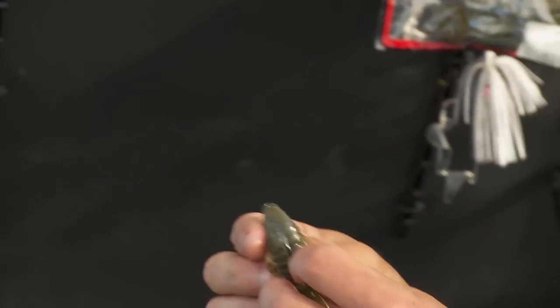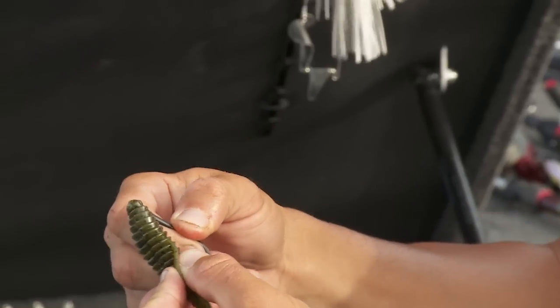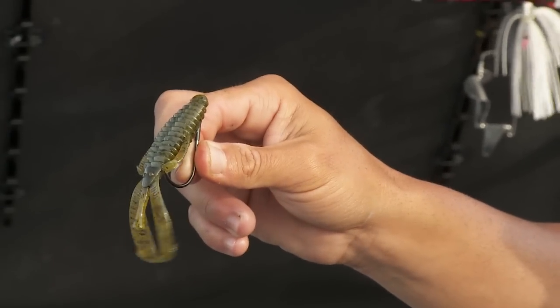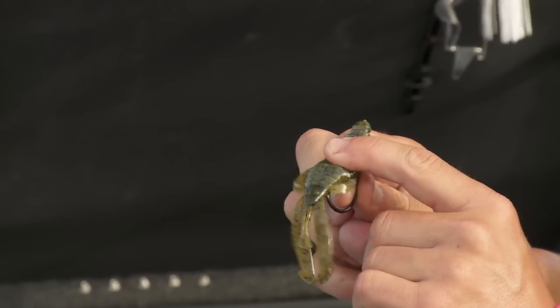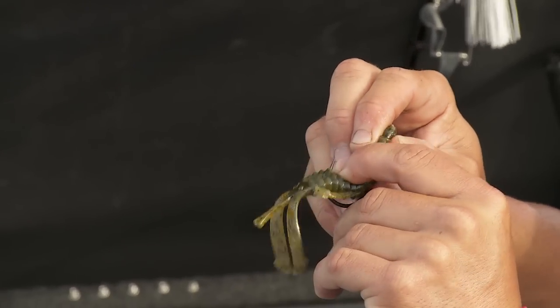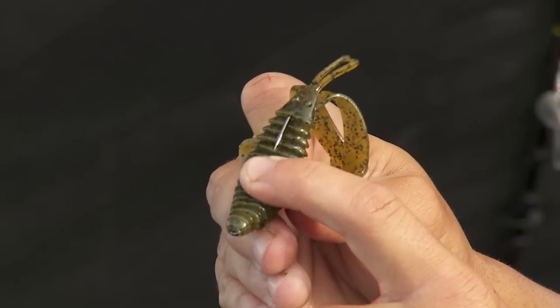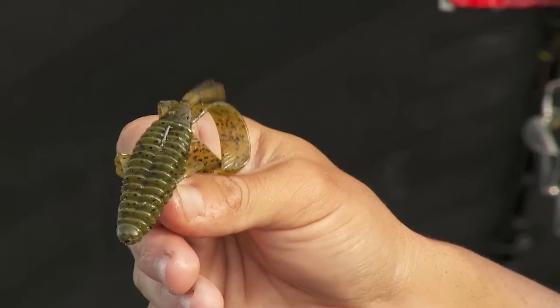You have to clean it cast after cast. So every cast you're re-putting your bug back on there and you're having to clean the grass off of it. When that grass is pushing up through it, pushes that bait through. Here I don't have near the hook point showing when I put pressure on the bait.